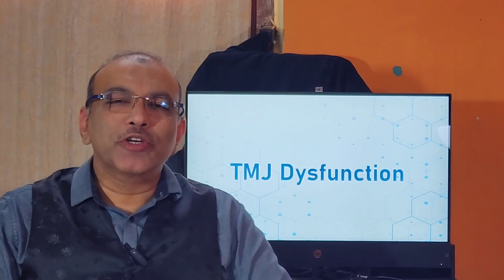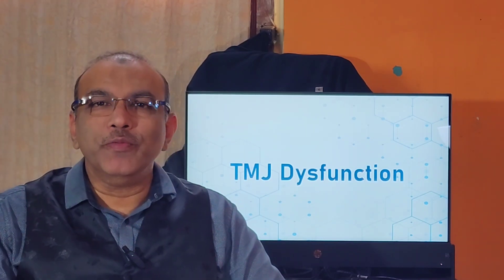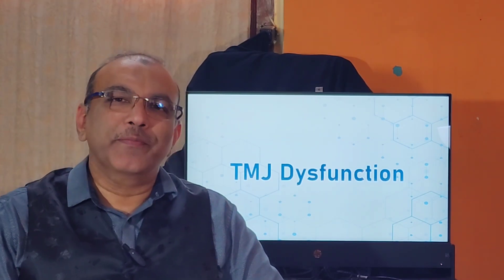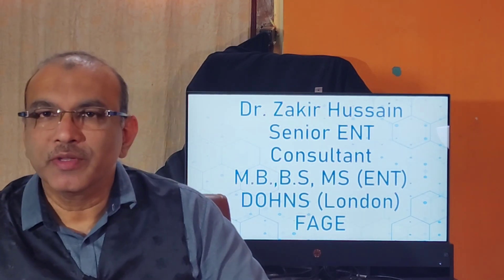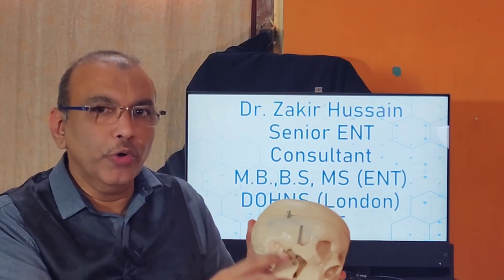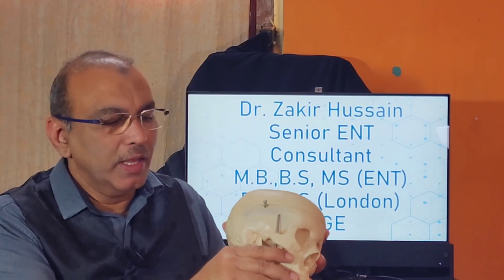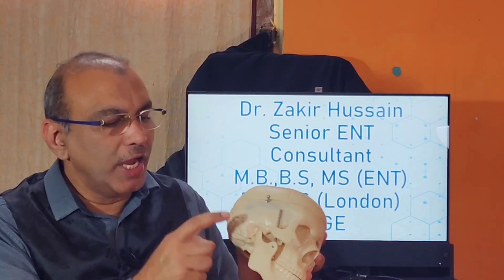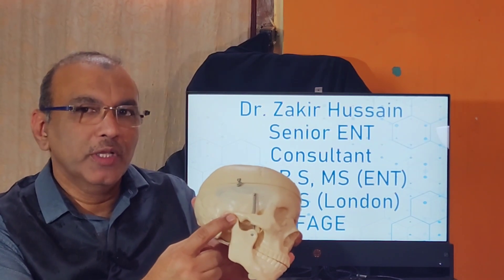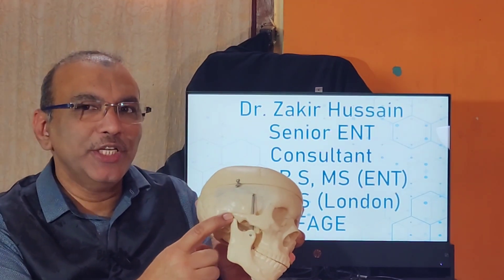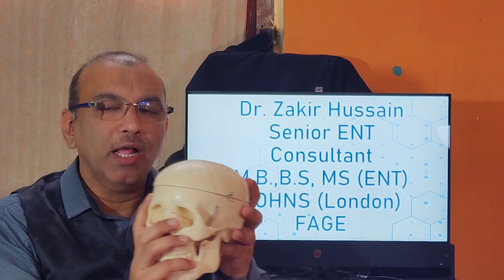Hello. Dr. Zakir here, senior ENT consultant. The topic is temporomandibular joint dysfunction. If you see this model, this is a temporal bone and this is the mandible, so you have the temporomandibular joint — the right side joint and the left one.